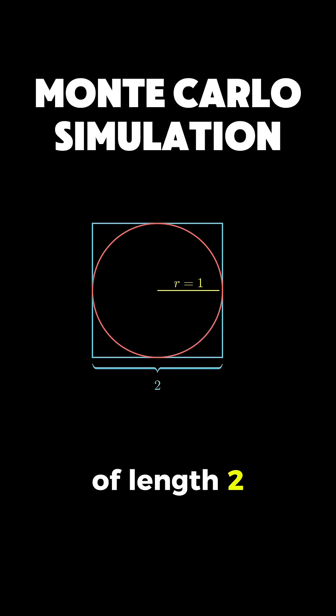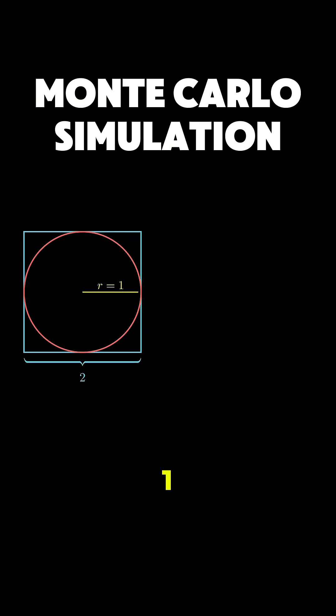We have a square with sides of length 2 and a circle inside with radius 1, which means the area of the circle is π times r squared, which equals pi, and the area of the square is 2 times 2, which equals 4.